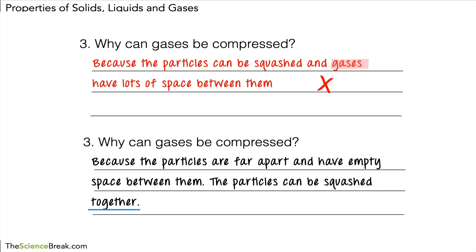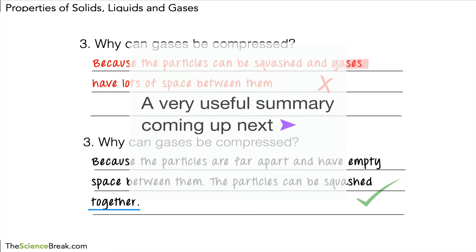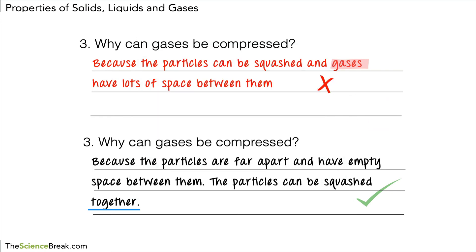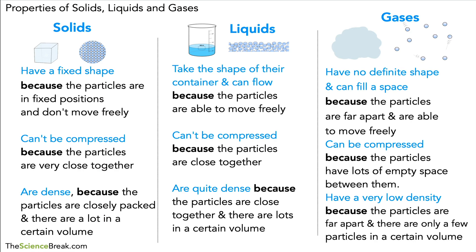So we have some very important skills in terms of being able to explain properties based on the behavior and arrangement of particles. To help you revise and really make sure you remember this, here is a summary of everything. In blue we've got the properties of solids, liquids and gases, and in black — with 'because' written in bold because it's so important — the reason for each property.